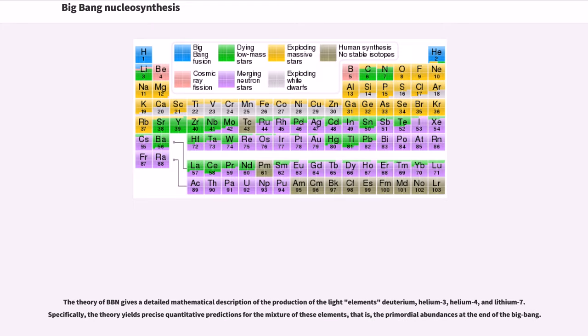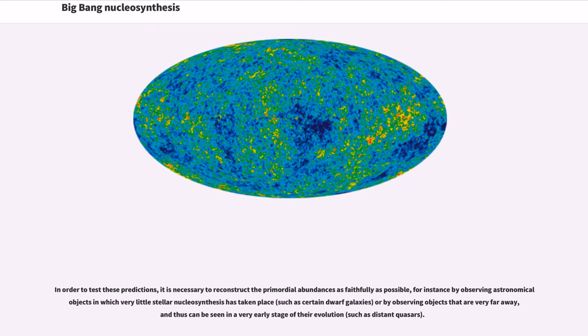The theory of BBN gives a detailed mathematical description of the production of the light elements deuterium, helium-3, helium-4, and lithium-7. Specifically, the theory yields precise quantitative predictions for the mixture of these elements, that is, the primordial abundances at the end of the Big Bang. In order to test these predictions, it is necessary to reconstruct the primordial abundances as faithfully as possible, for instance by observing astronomical objects in which very little stellar nucleosynthesis has taken place, or by observing objects that are very far away, and thus can be seen in a very early stage of their evolution.